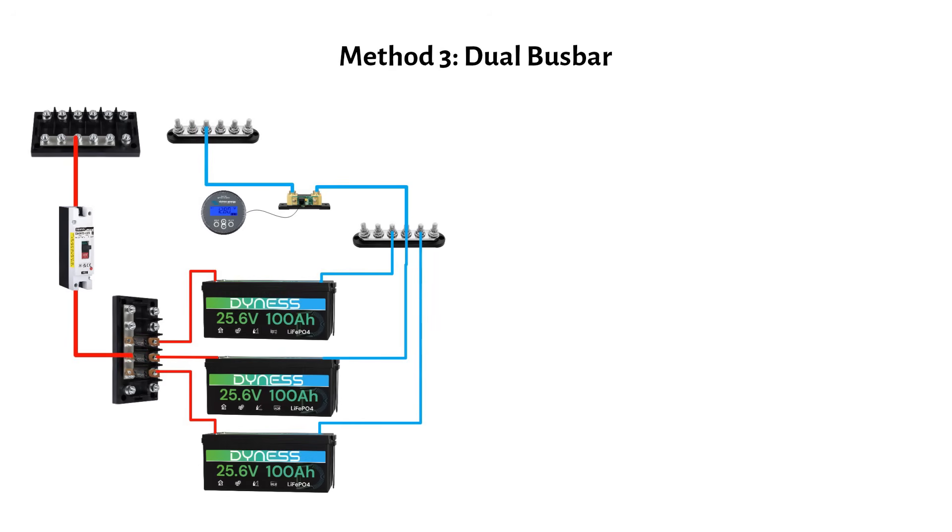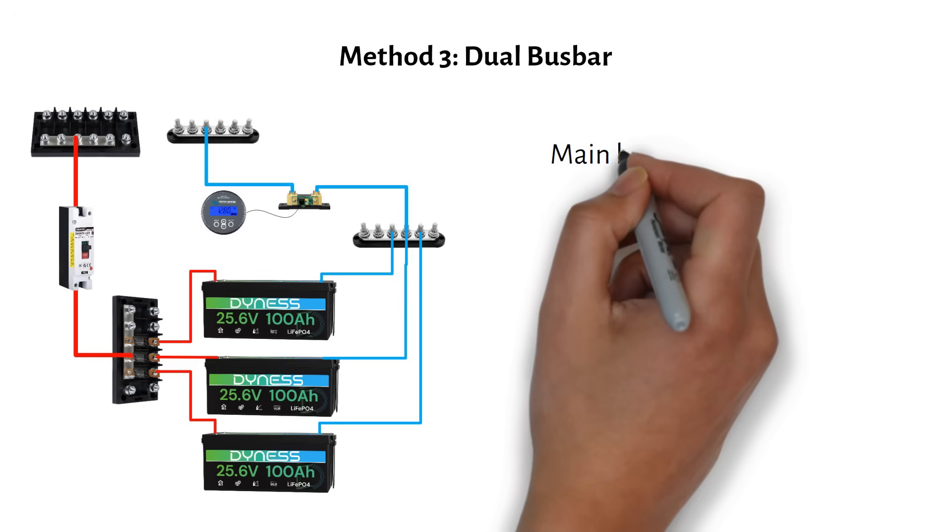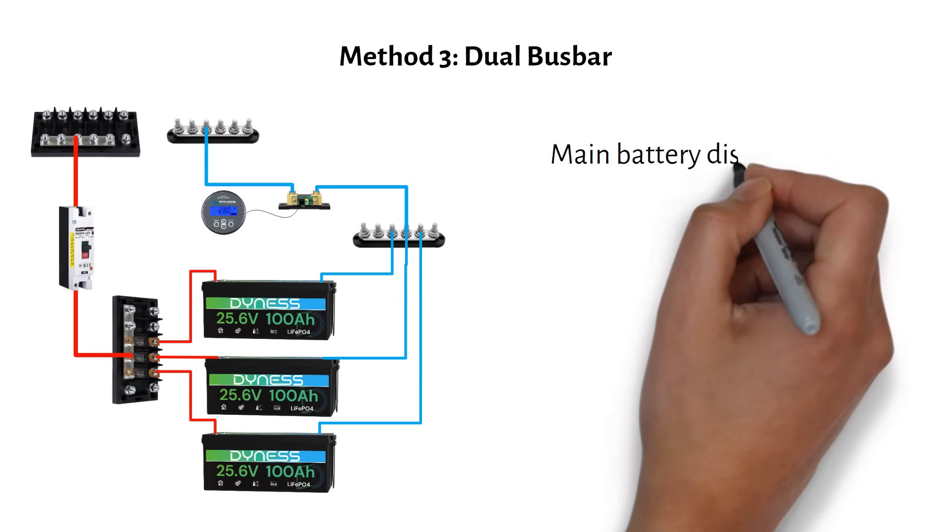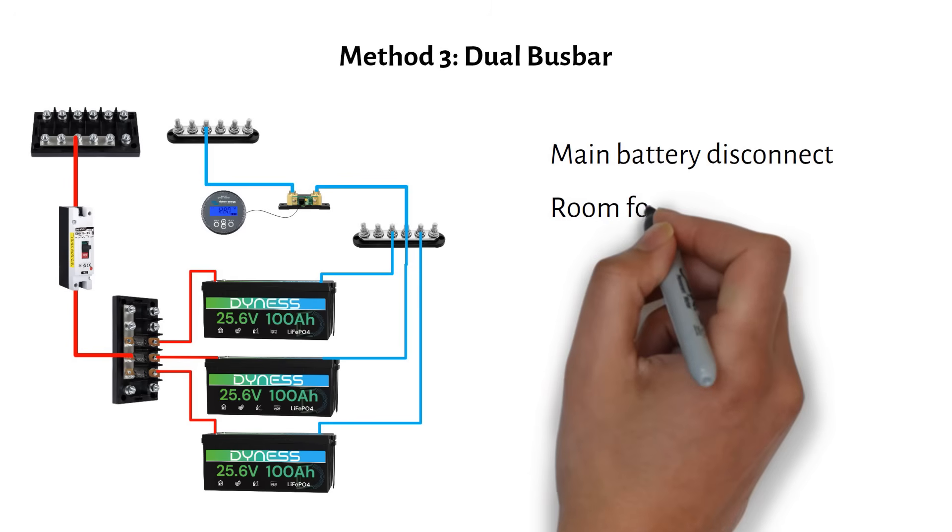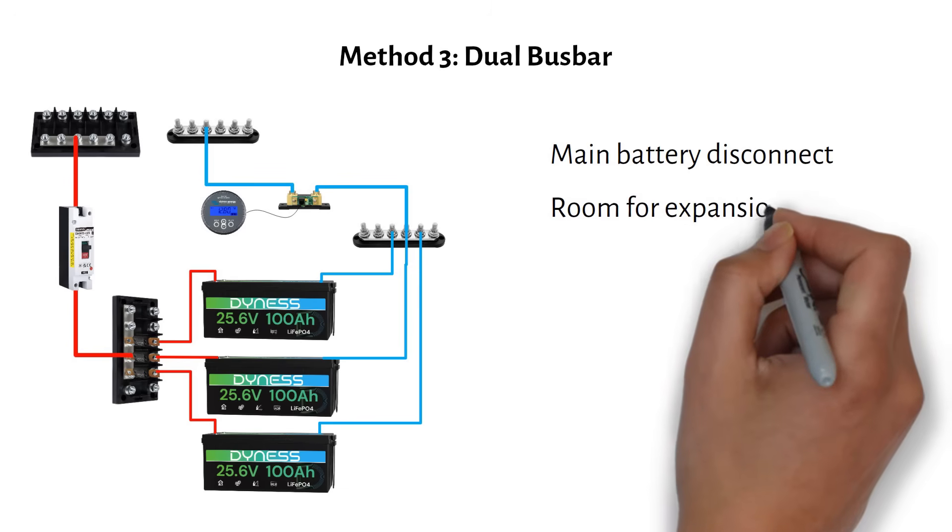The third method is ideal when you have more than three batteries in parallel. Here your batteries connect to a dedicated battery bus bar. This one can handle up to five batteries. Then you run a single large cable from the battery bus bar to your main system bus bar. This main cable needs overcurrent protection. Either a breaker, class T fuse, or NH00 fuse. This setup is clean and organized. Plus, there's plenty of room for expansion if you add more batteries later.